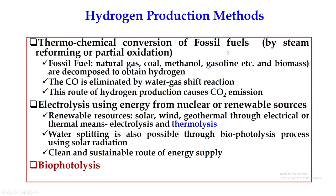The first technique is thermochemical conversion of fossil fuels by steam reforming or partial oxidation. Different fuels that can be used include natural gas, coal, methanol, gasoline, biomass — these are decomposed to obtain hydrogen. Here, carbon monoxide is generated and must be eliminated by promoting the water gas reaction. This route of hydrogen generation causes carbon dioxide emission, which is why it is not sustainable, and people are looking for alternative techniques.